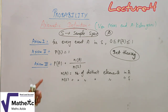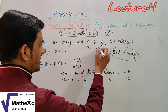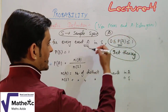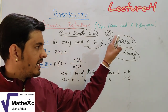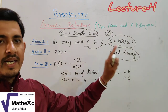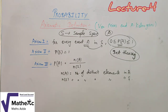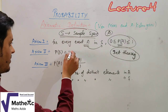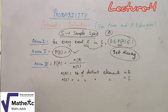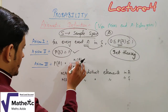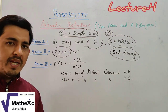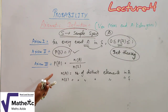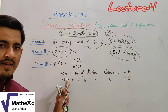The three axioms are: first, for any event A, the probability of A lies between 0 and 1 — it is always a non-negative number. Second, the probability of the entire sample space S is equal to 1. Third, for mutually exclusive events, the probability of their union equals the sum of their individual probabilities. These axioms form the foundation of the axiomatic approach.